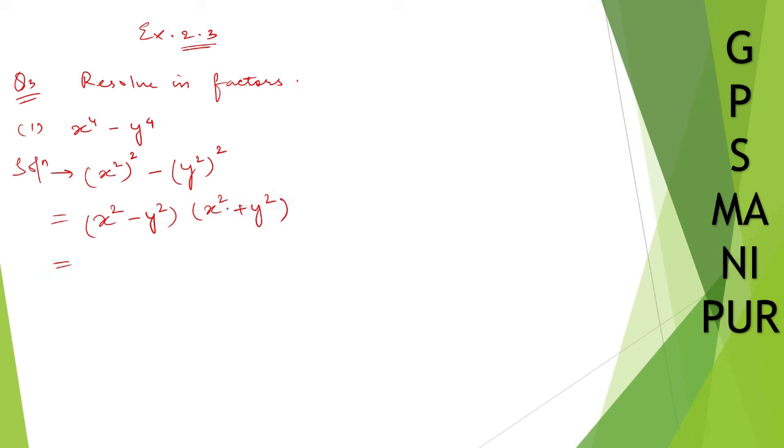And now x squared plus y squared you can write down as is. But this one x squared minus y squared you can write down as x plus y, using a squared minus b squared formula, so a plus b, a minus b. So x squared minus y squared becomes x plus y, x minus y.